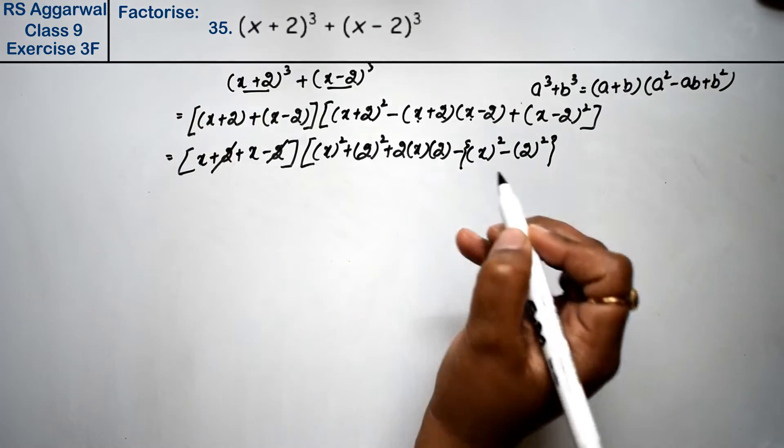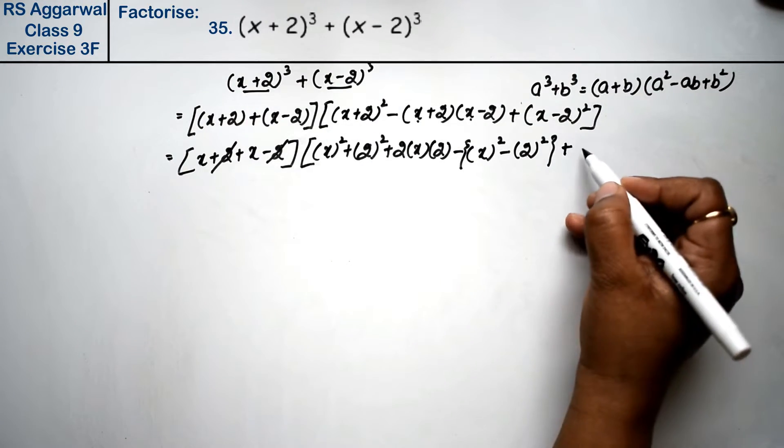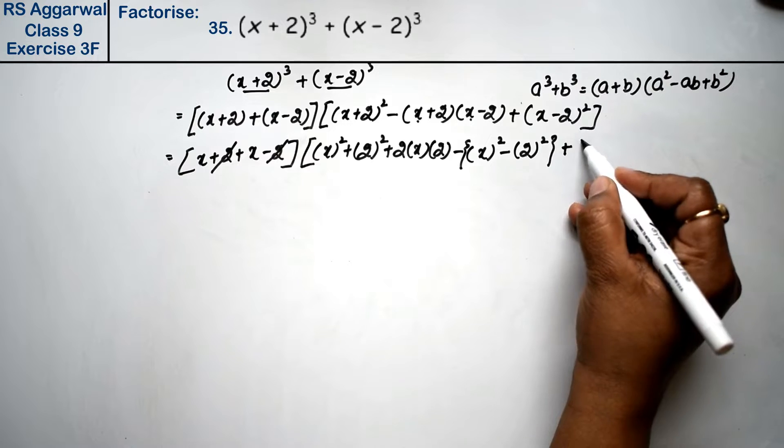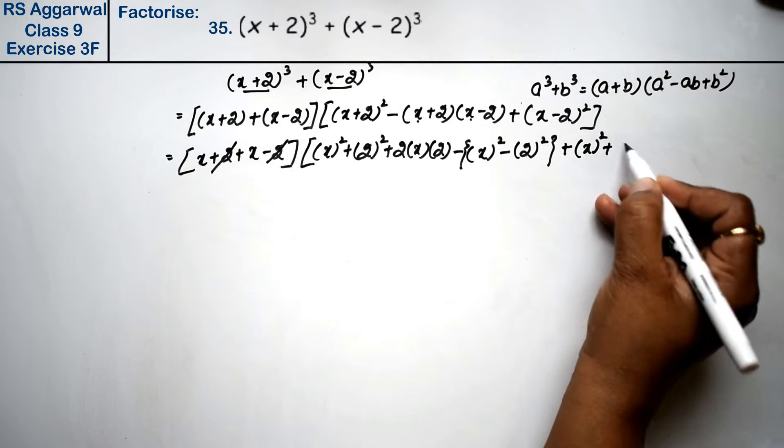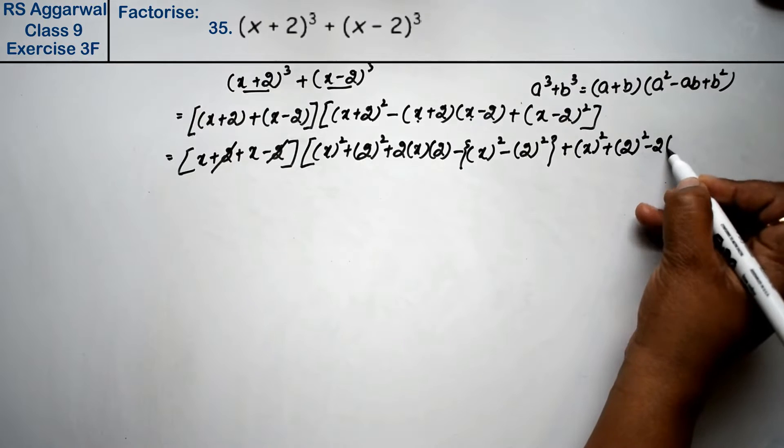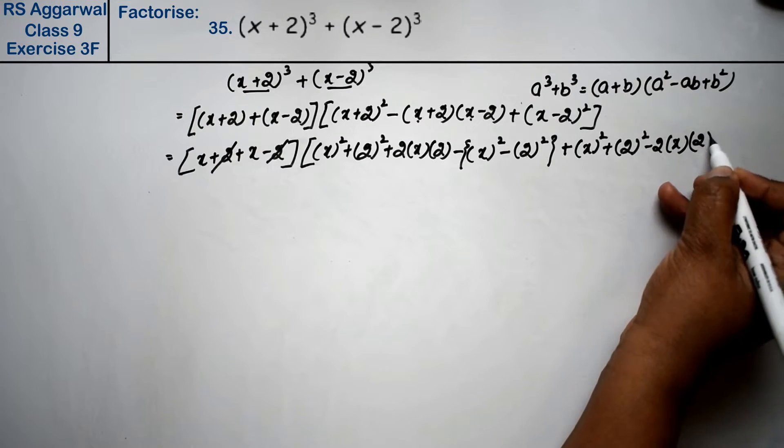Plus (a-b)² which uses the formula a² + b² - 2ab.